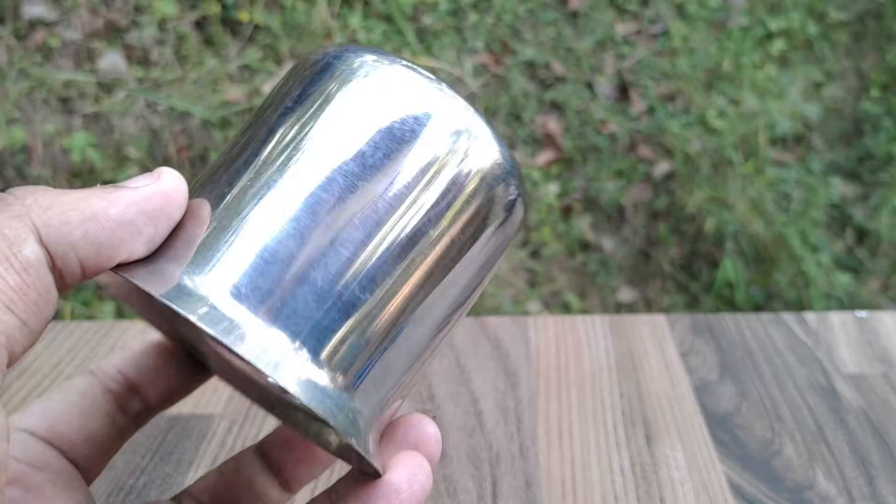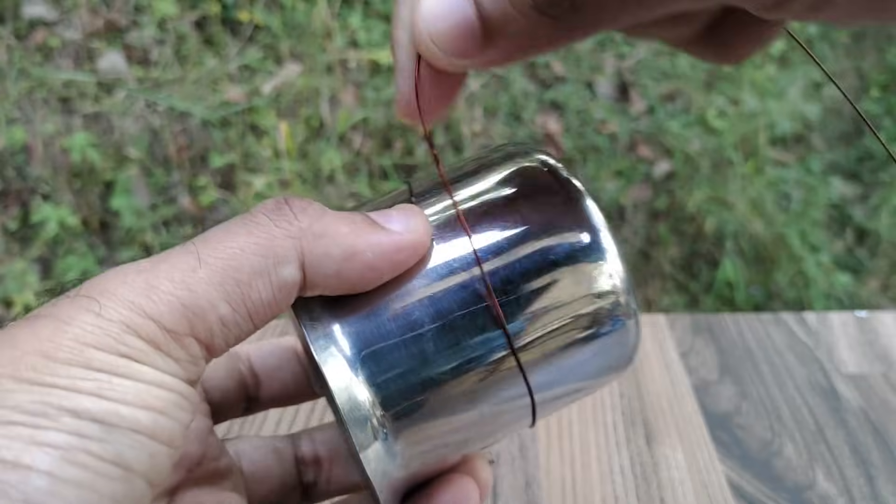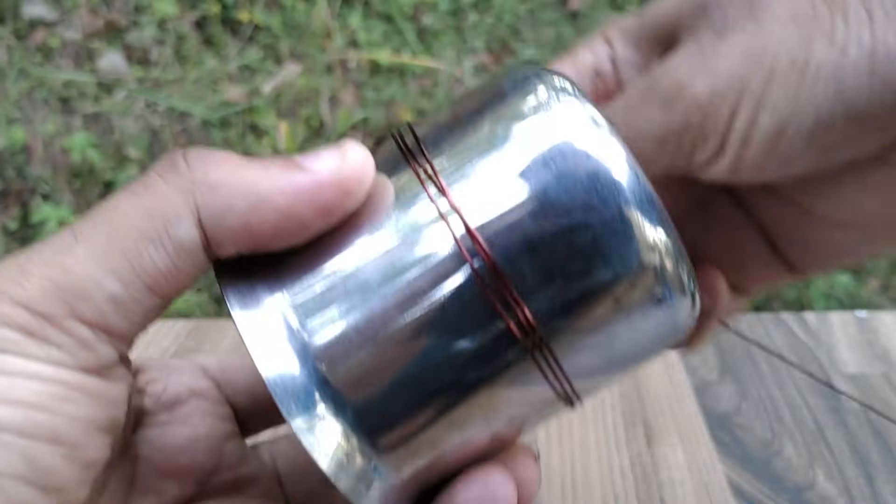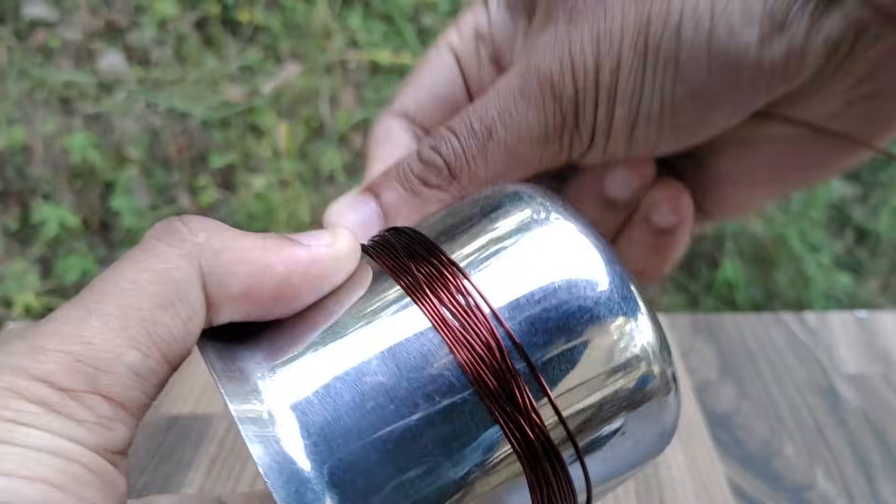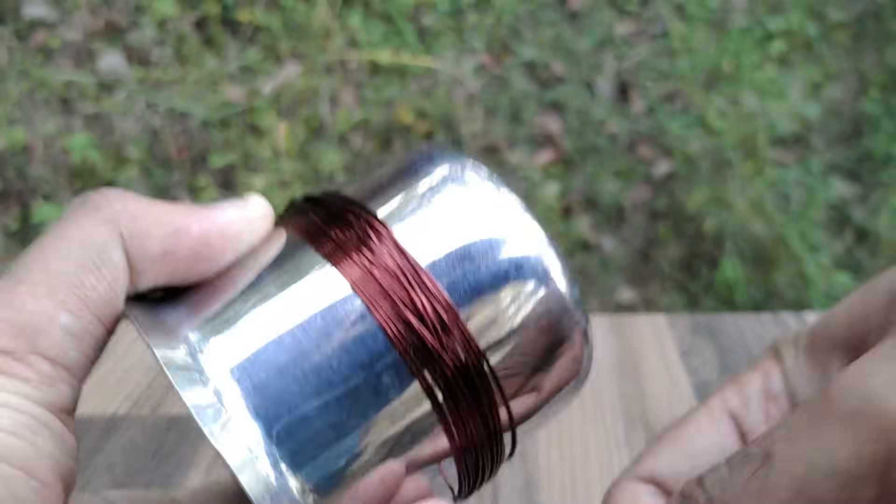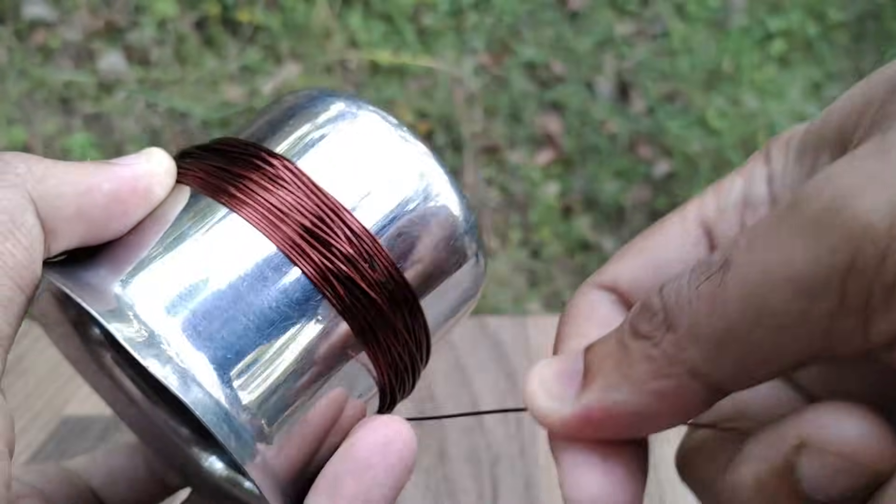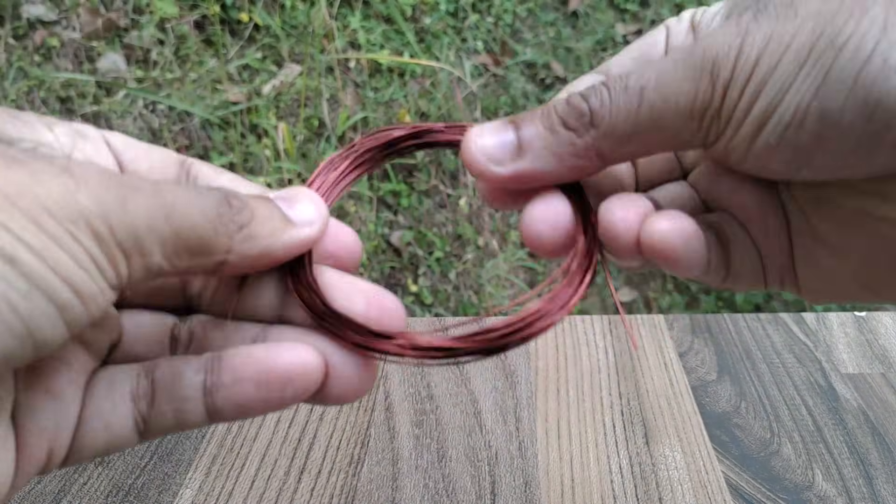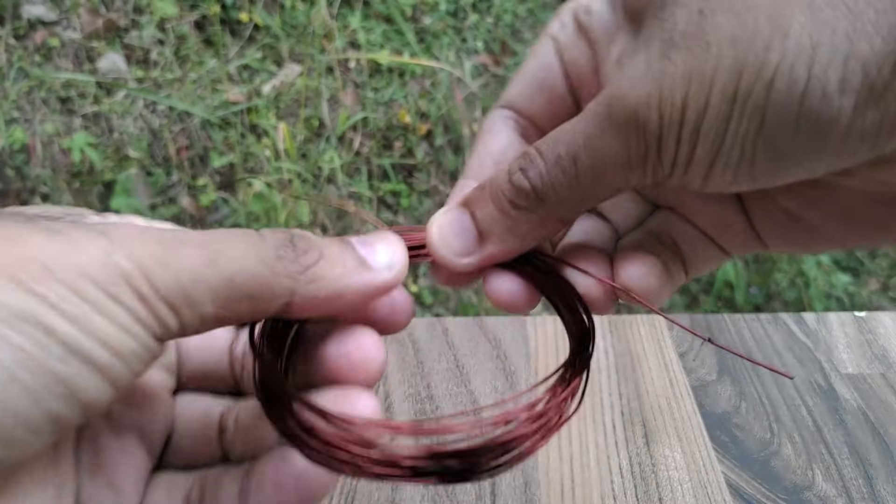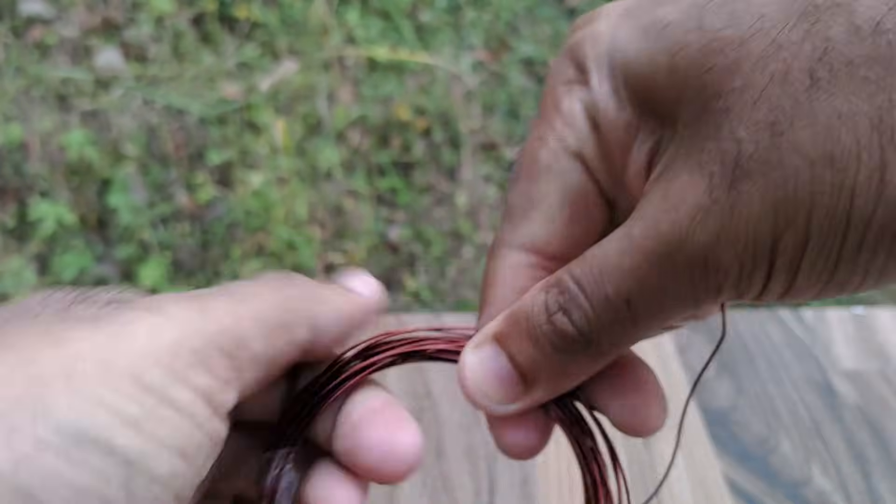First we will make the receiver coil which is very simple. Take any cylinder like a glass and start winding the copper wire on it. Wind a total of 30 turns to make the receiver coil. The coil that I made is 50 millimeters in diameter. Now take out the coil. Wind a tape at three locations so that the coil doesn't become loose.